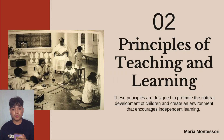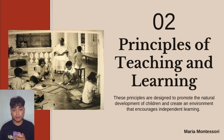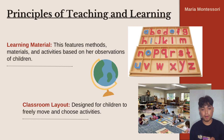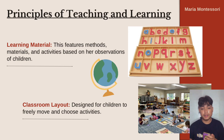Moving on to the next point, which is about the principles of learning. These principles are designed to promote the natural development of children and create an environment that encourages independent learning. The first principle is about learning materials — this method features materials and activities based on the observation of children. For example, Montessori teaching values hands-on learning, shown through tools like the movable alphabet, where kids can make words connecting symbols and sounds.